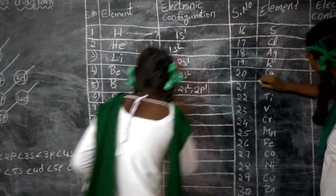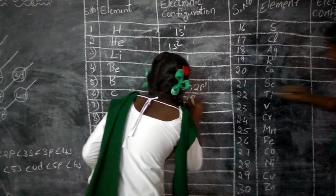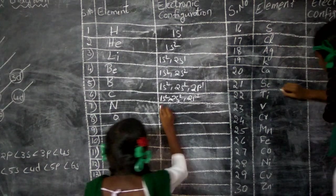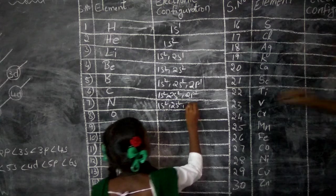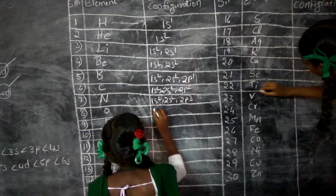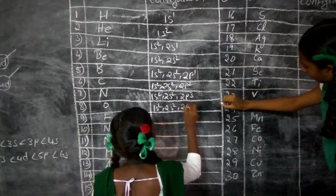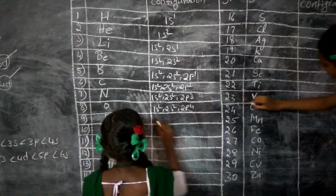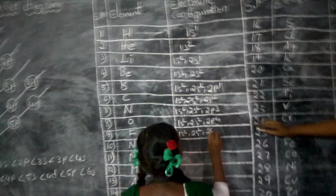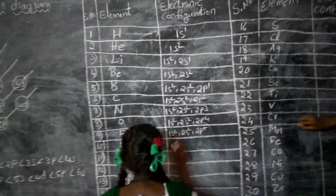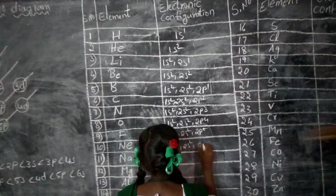1s2, 2s2, 2p2. 1s2, 2s2, 2p3. 1s2, 2s2, 2p4. 1s2, 2s2, 2p5. 1s2, 2s2, 2p6.